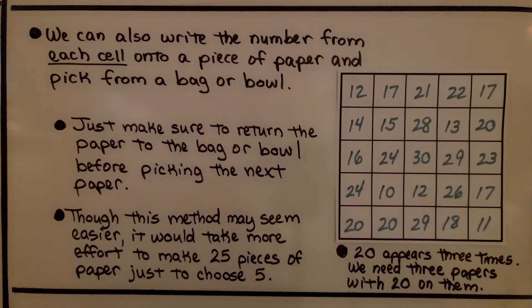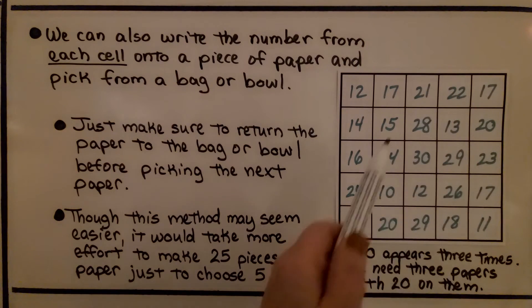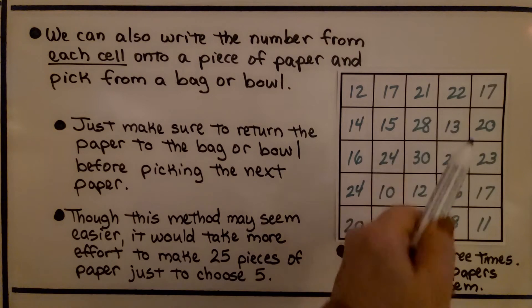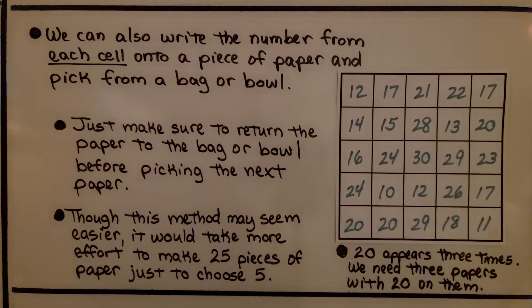We can also write the number from each cell onto a piece of paper and pick it from a bag or bowl. Just make sure to return the paper to the bag or bowl before picking the next paper. Though this method may seem easier, it would take more effort to make 25 pieces of paper just to choose five.